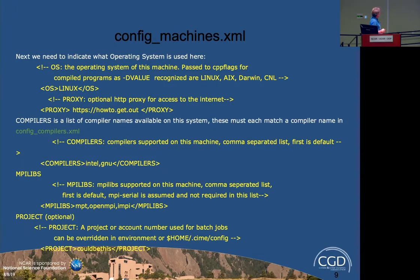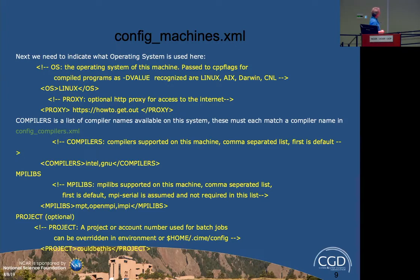We support Intel, GNU, PGI — now called NVHPC as the replacement for PGI — NAG which is a Fujitsu compiler, and the new Clang compilers, which are now the default on Mac. For MPI, MPT is the SGI/HPE version, we support OpenMPI, and IMPI is Intel's version of MPICH. The project is an optional field — a lot of HPC systems require a project in your job submission, and this will fill that in if it's there.